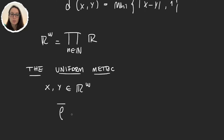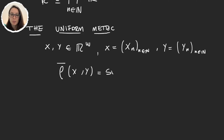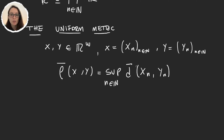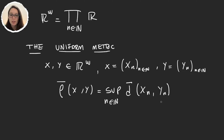we define the uniform metric ρ̄ of x and y as follows. Let x = (x_n) and y = (y_n) for n a natural number, where each x_n, y_n is a real number. Then we define ρ̄ to be the supremum over all natural numbers n of the bounded distance d̄ between coordinates x_n and y_n. We calculate all the bounded distances between each component of x and y, then take the supremum. This is the ρ̄ distance between elements in the product space R^ω.